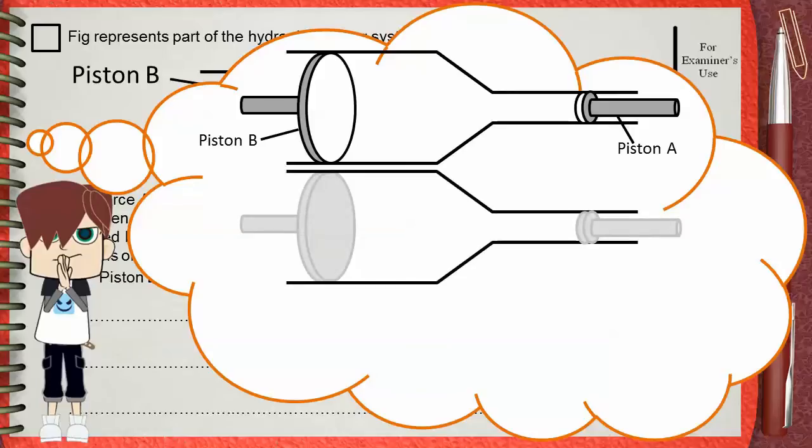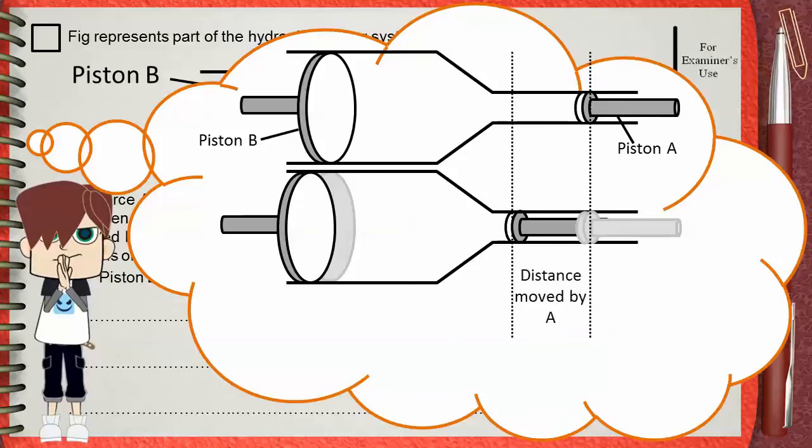The question says that when Piston A is pushed, it moves a distance inwards, so Piston B is consequently pushed outwards. But the distance moved by Piston A inwards is greater than the distance moved by Piston B outwards.